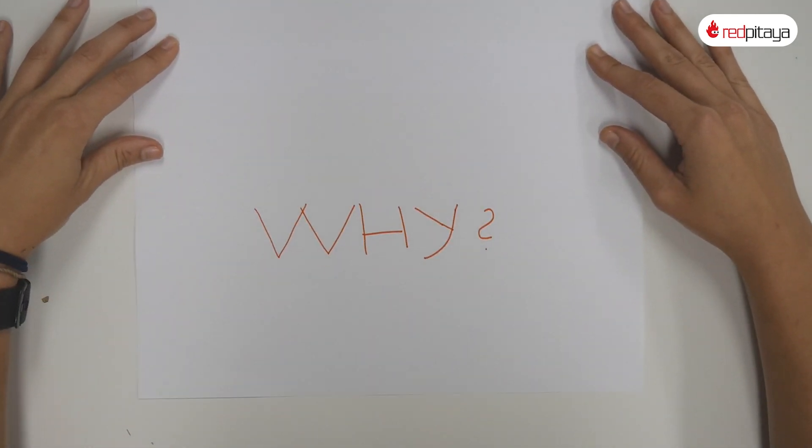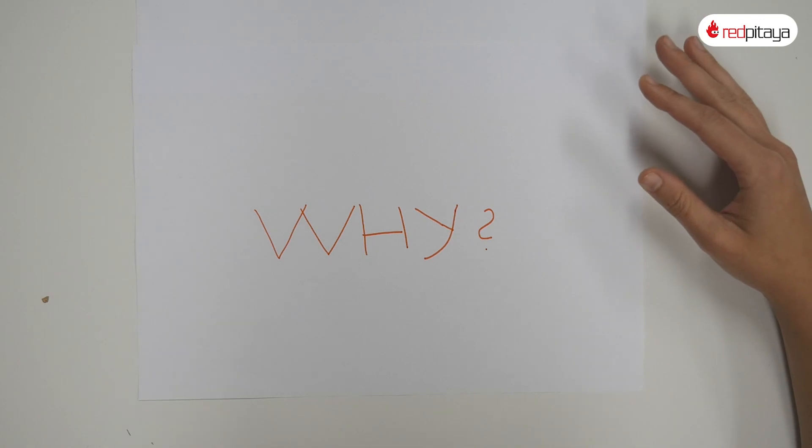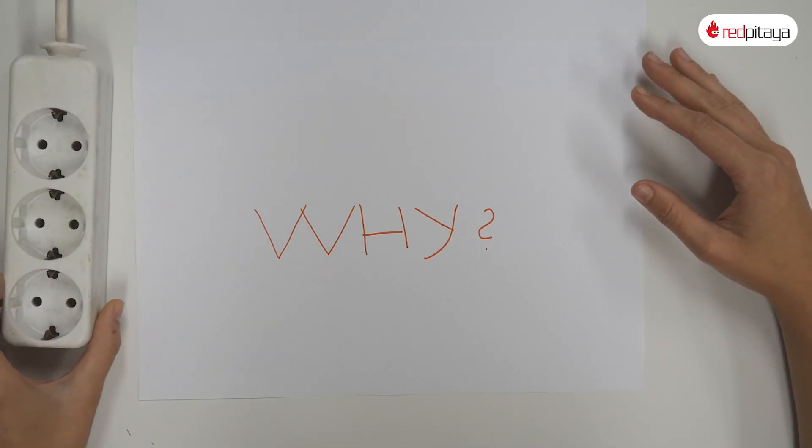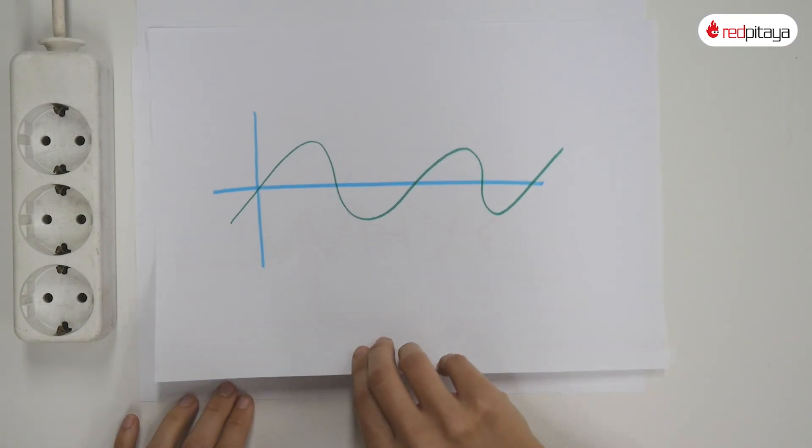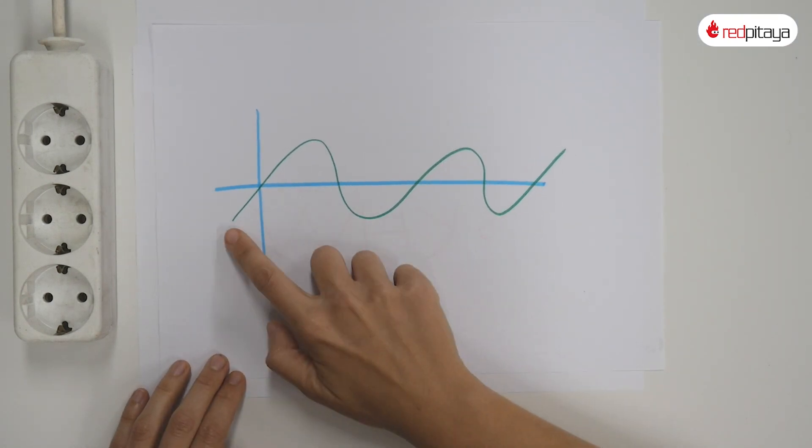The mains voltage is an AC voltage source. AC stands for alternating current. This means that the voltage is alternating between positive and negative in a sinusoidal pattern.